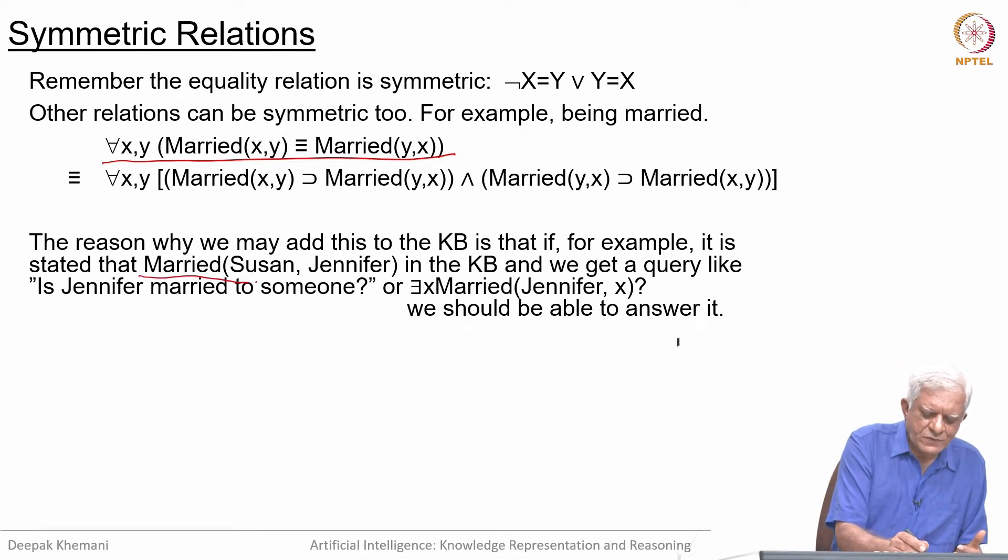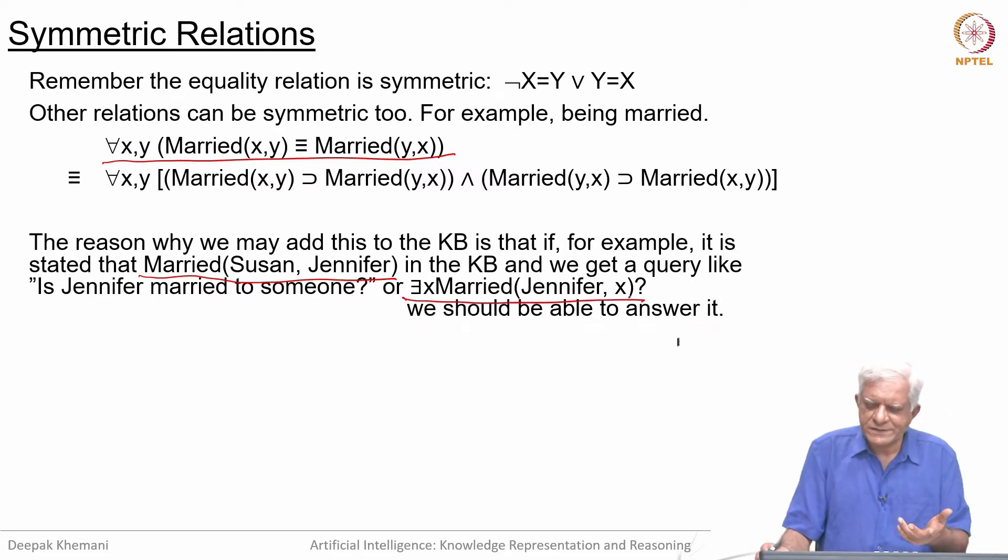But the query might be: is Jennifer married to someone? In the query, Jennifer occurs at the first argument and x is the second argument. But in the knowledge base, Susan is the first argument and Jennifer is the second argument. We know that if Susan is married to Jennifer, then Jennifer is married to Susan. But we need to use the symmetry axiom to arrive at that answer. If you are doing backward chaining, like in Prolog, the query 'is Jennifer married to someone' would be translated into 'is someone married to Jennifer,' and then you can match the fact that Susan is married to Jennifer.